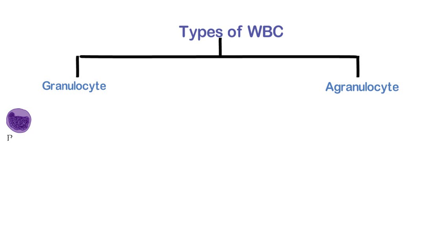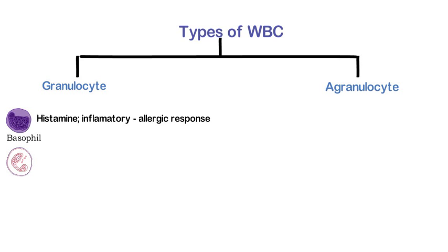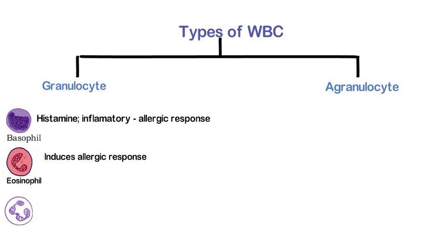Granulocytes are further divided into three types. Basophils have a large lobed granular nucleus; when an infection occurs, mature basophils are released from bone marrow and travel to the infection site, releasing histamine which contributes to the inflammatory response. Eosinophils appear red in eosin stain and have a bilobed nucleus; they respond to chemicals emitted by parasites and induce an allergic response. Neutrophils appear blue in hematoxylin and kill pathogens like bacteria and fungi by producing substances as they phagocytose the organism.